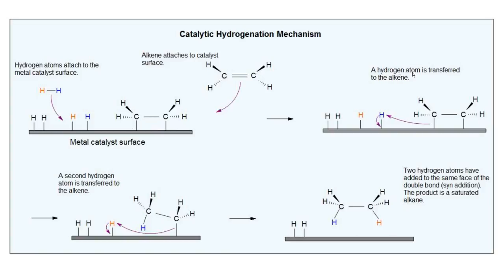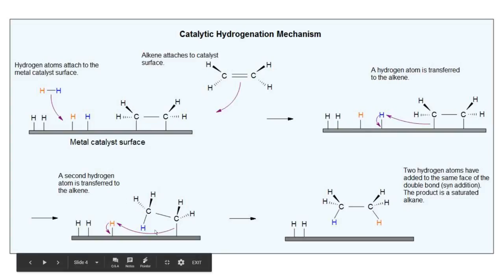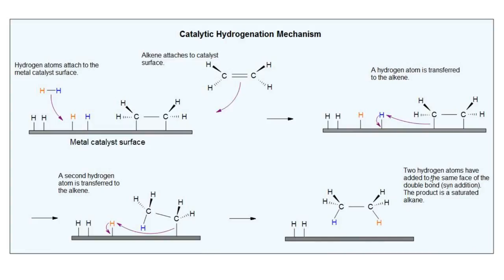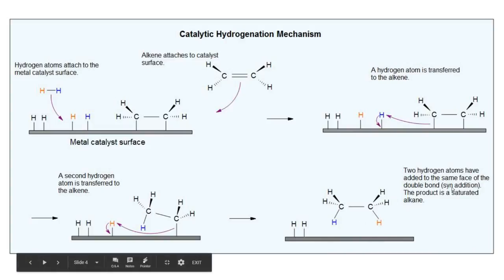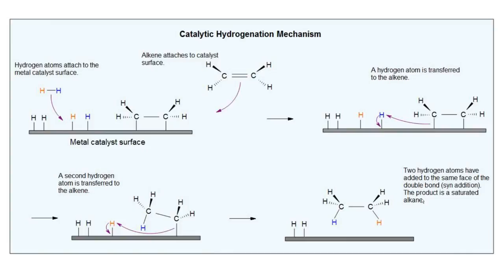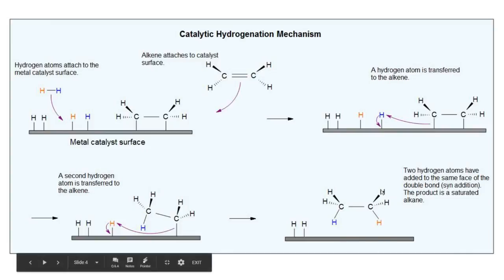A hydrogen atom is transferred to the alkene, and then a second hydrogen atom is transferred to the alkene. The two hydrogen atoms have added to the same face of the double bond, and this is known as syn addition. The product is a saturated alkane.